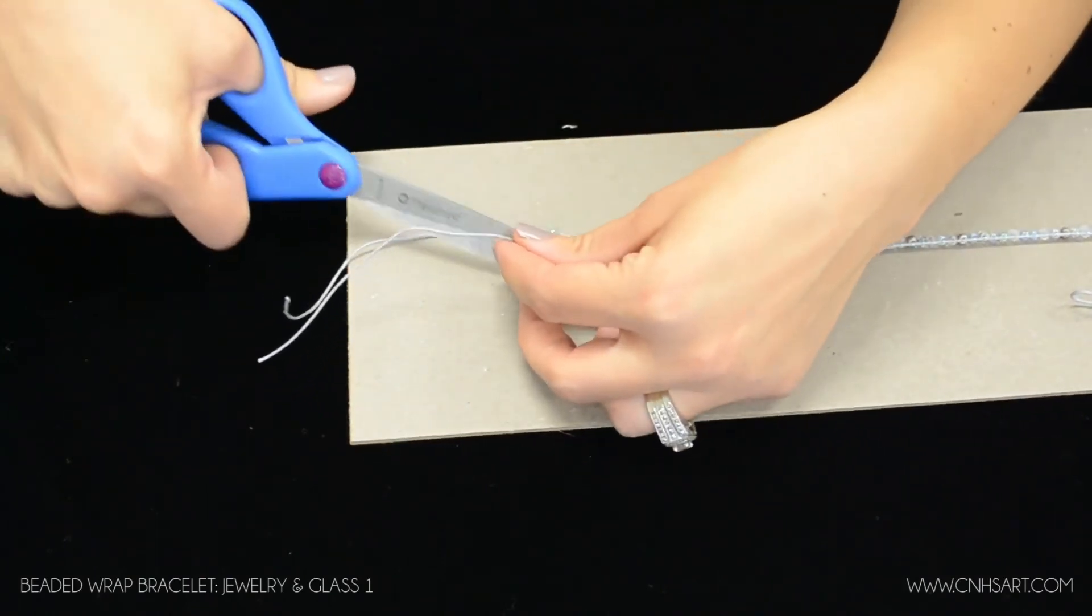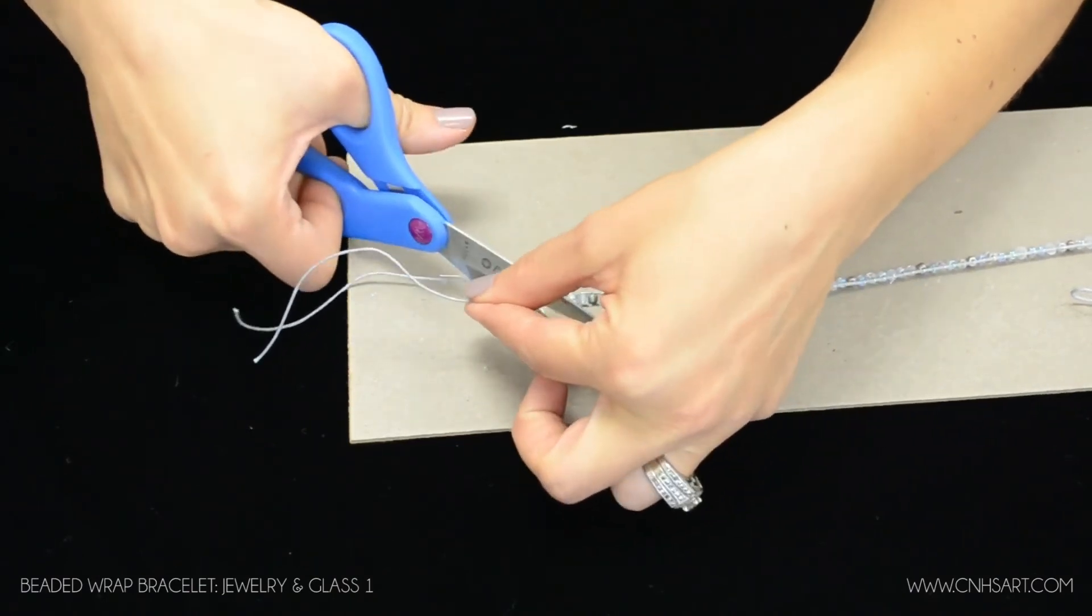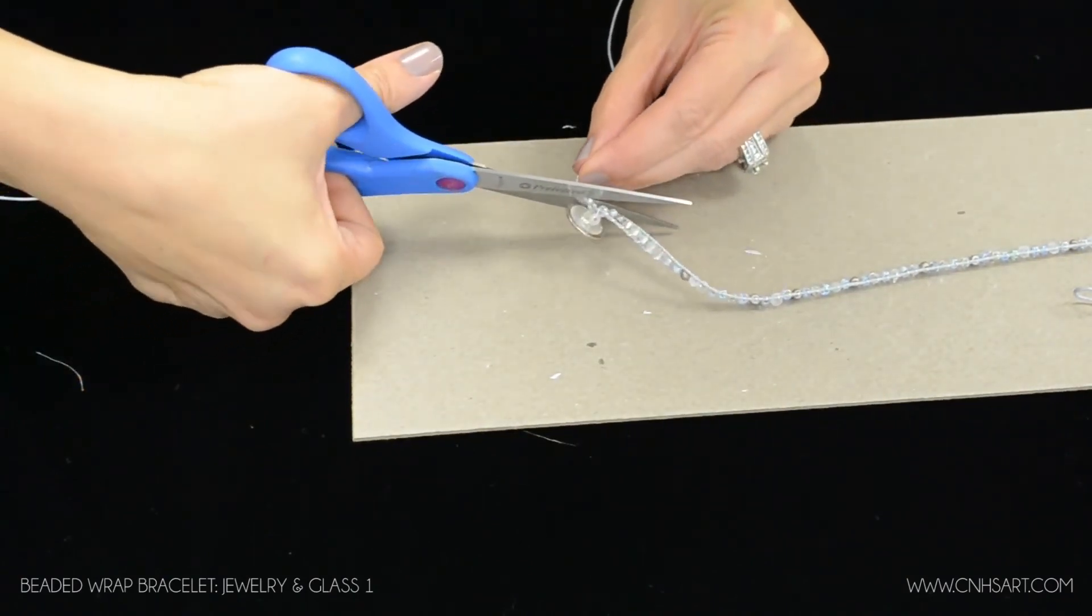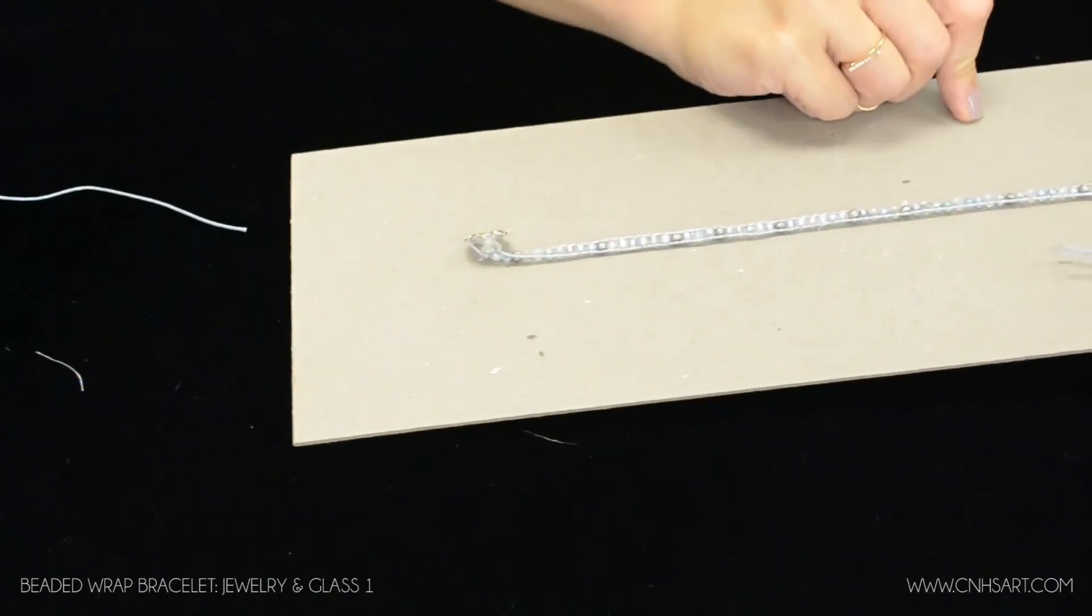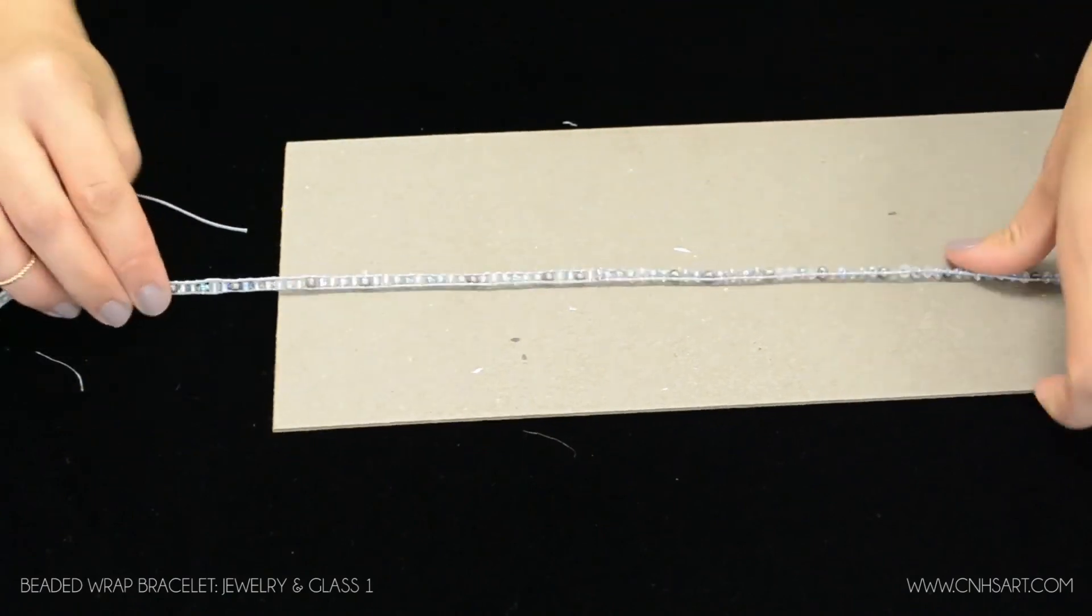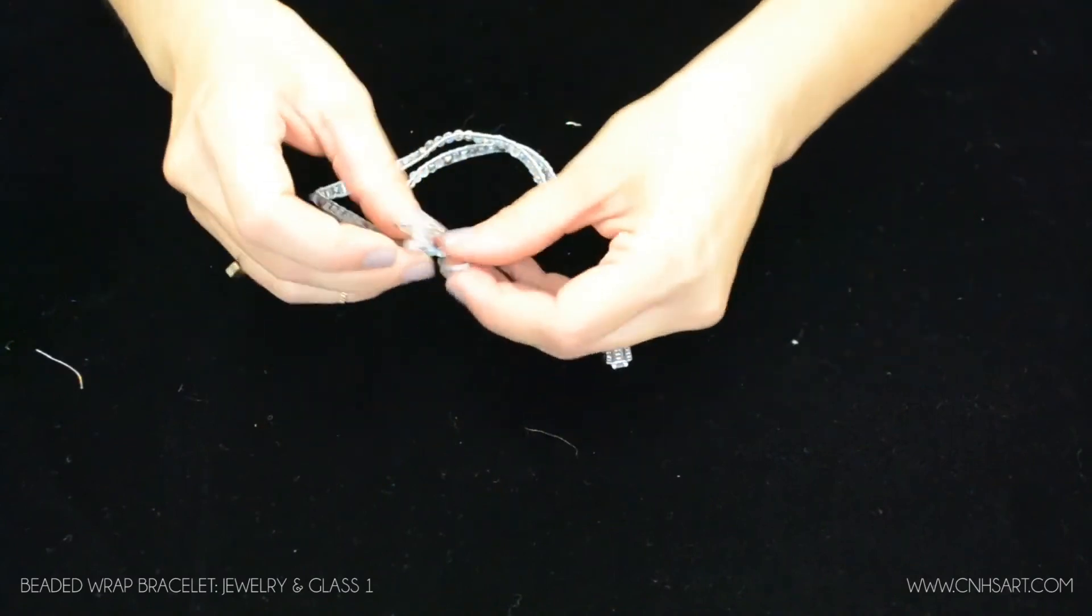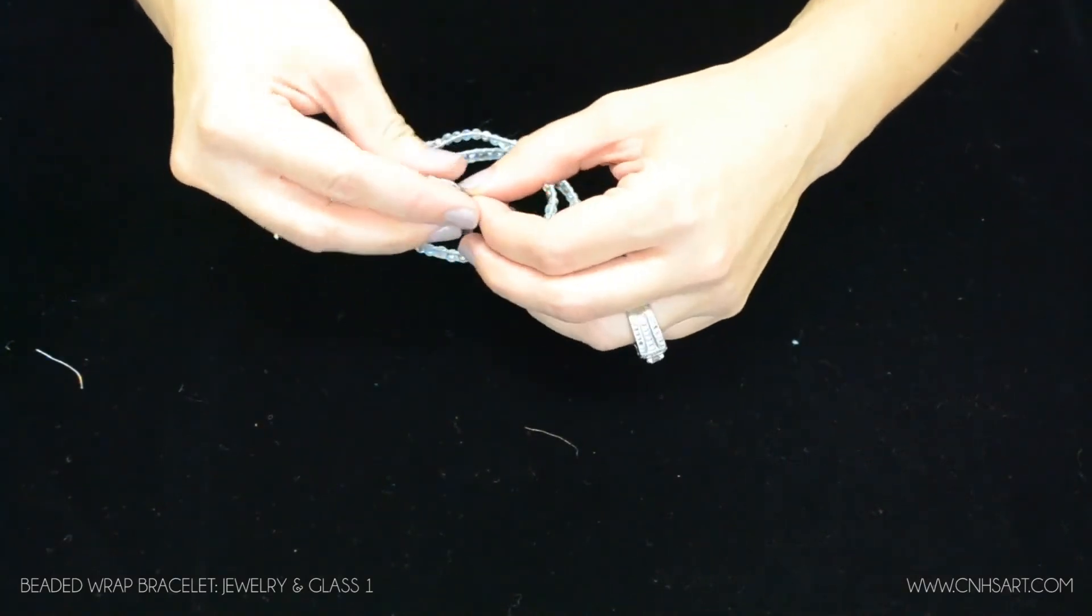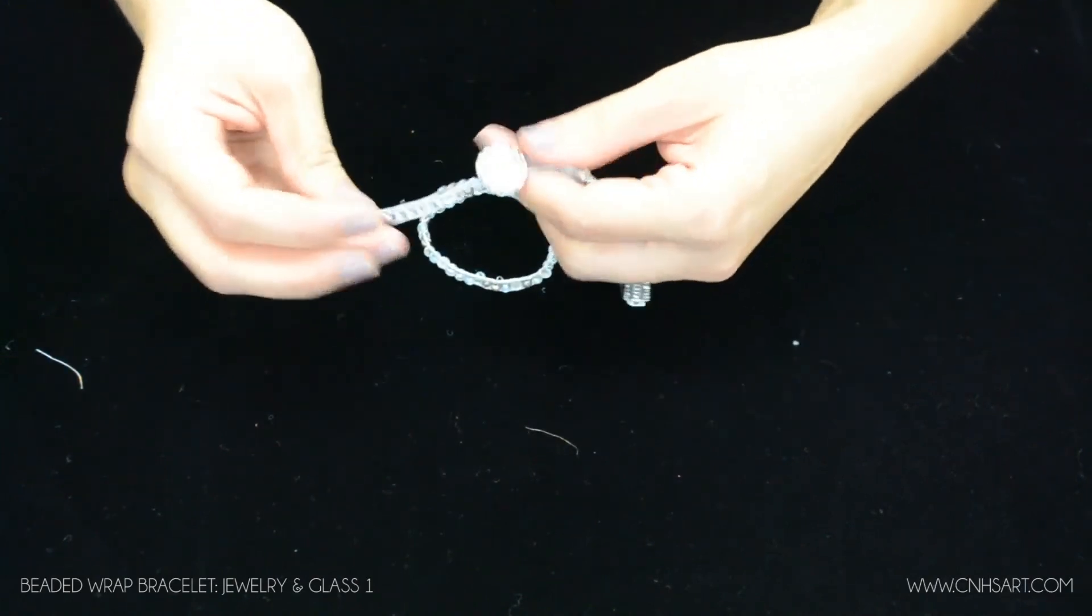Trimming the cord as well as the thread. Like that. I'm going to unclip this. And now you'll see once this wraps around the button will go through your loop and that serves as your clasp. So that's what holds it in place.